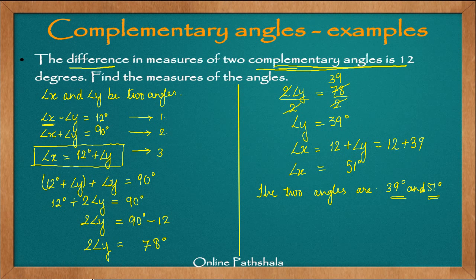We can verify: angle x minus angle y is 51 minus 39 equals 12 degrees, which is correct. And 51 plus 39 equals 90 degrees, satisfying both equations. Therefore the two angles are 51 degrees and 39 degrees. In the next video we will learn about supplementary angles.